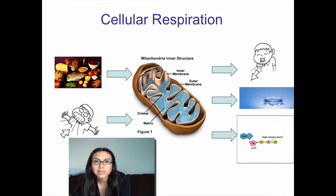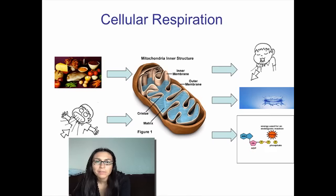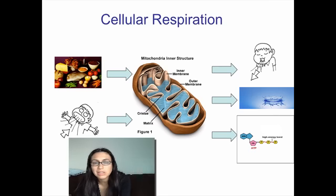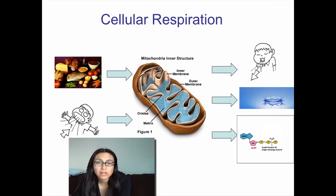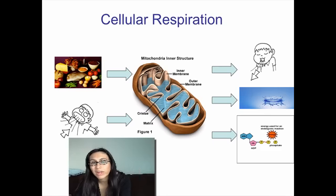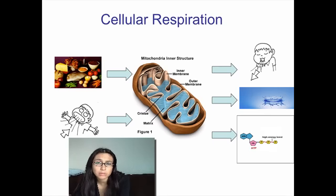Hey Mustangs, in this video we're going to take a look at cellular respiration. If you look at the diagram in front of us, it's a simplified diagram of what's going on with cellular respiration. It has the organelle where it takes place. On the left-hand side we have the two things needed for cellular respiration to occur, and on the right-hand side we have the three things produced as a result.